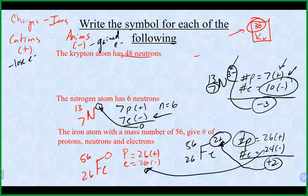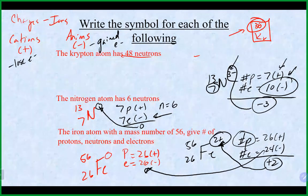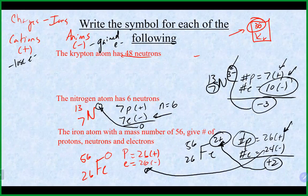Similarly for iron with a plus-two charge: iron has 26 locked-in positive charges. We only need 24 negative charges, and 26 minus 24 leaves a plus-two — which is where the charge comes from.